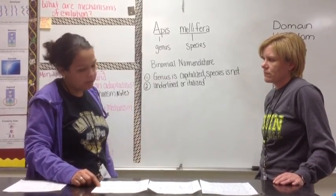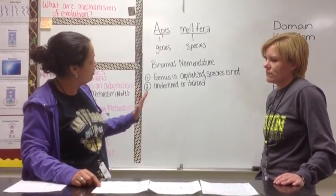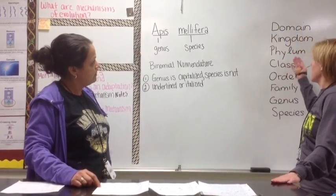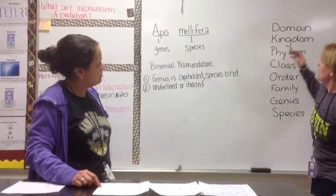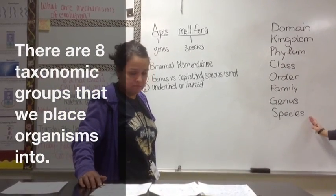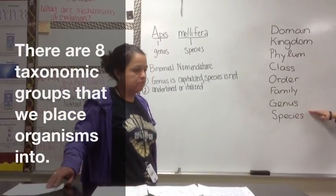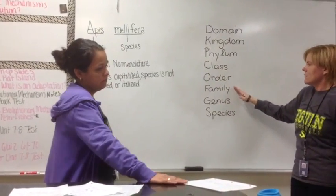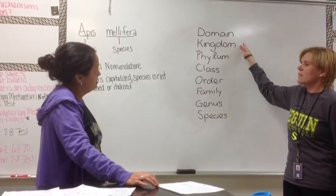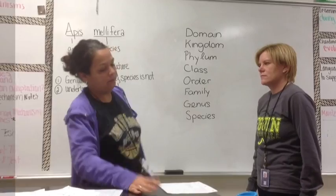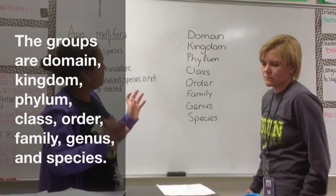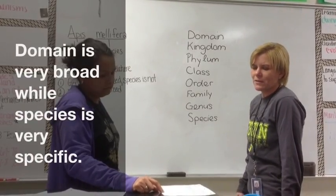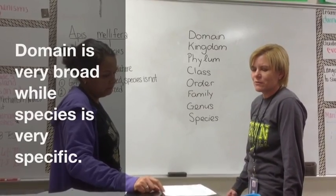Are the genus and species the only taxonomic groups that organisms fit into? No — there are actually eight levels. We start with the domain and end with the species. The honeybee, for example, also has a family, an order, a class, a phylum, a kingdom, and a domain. Domain is the broadest grouping, and species is the most specific.